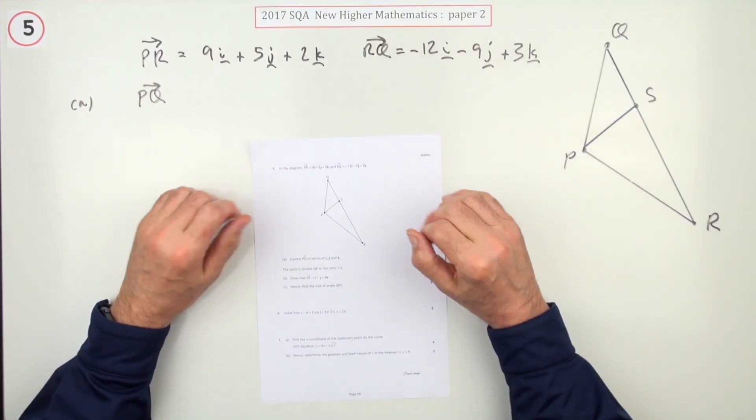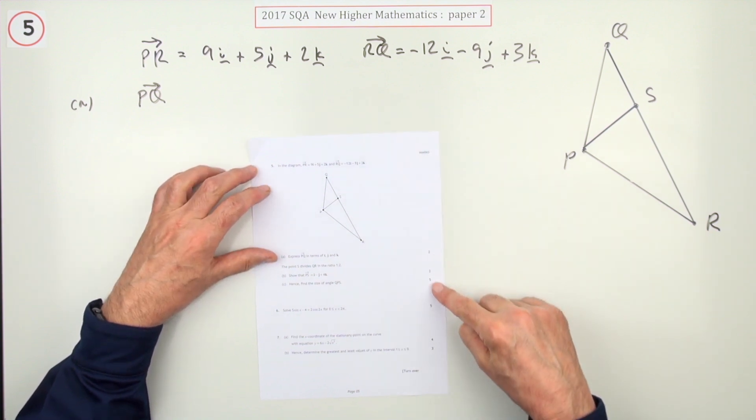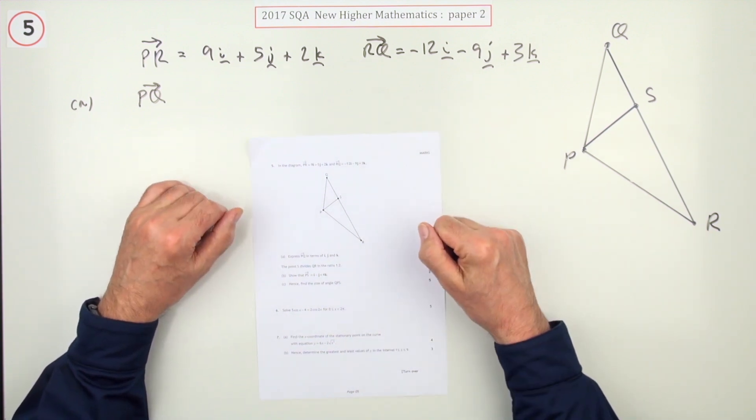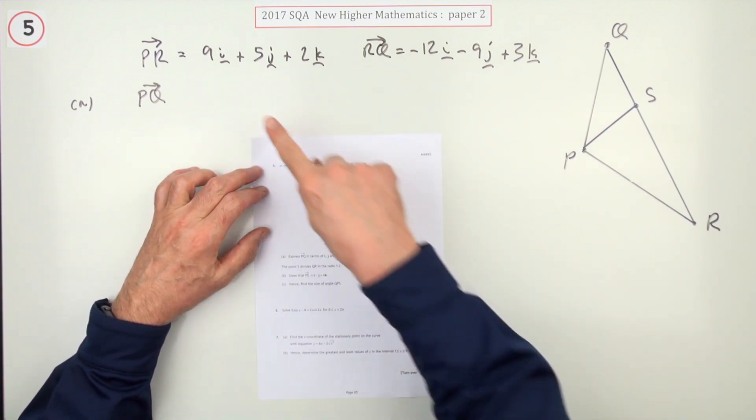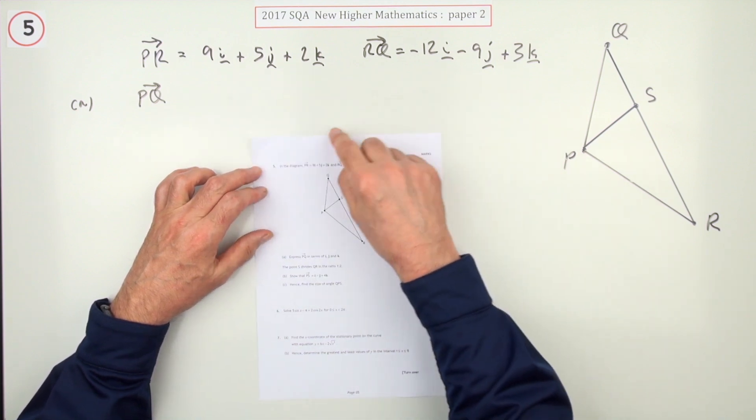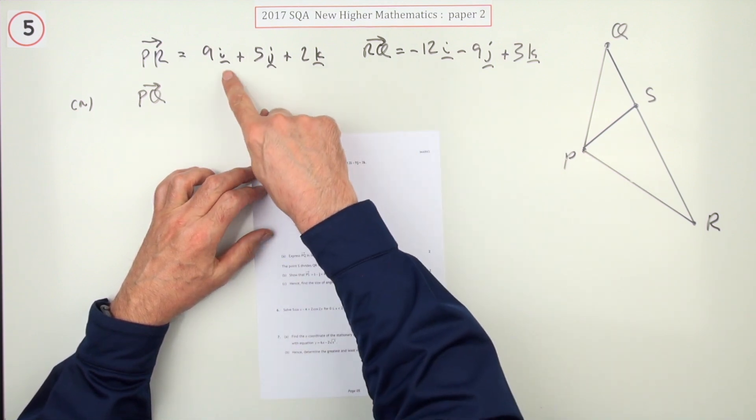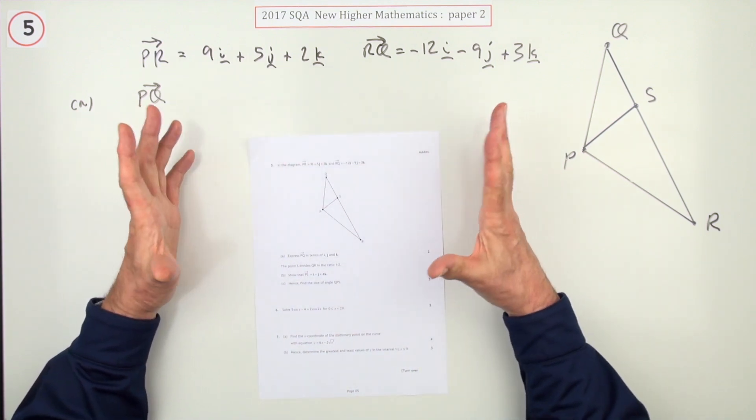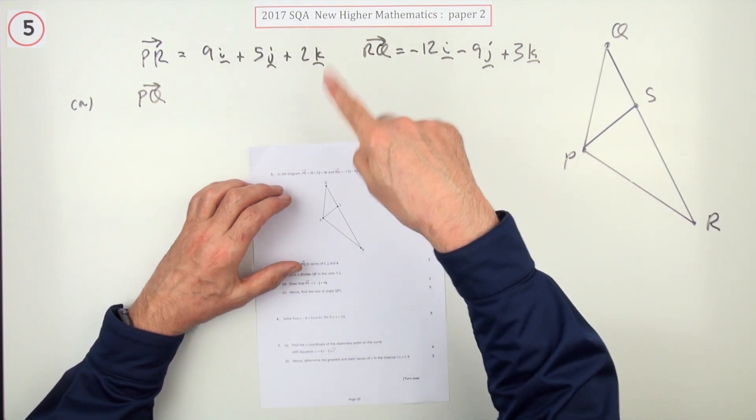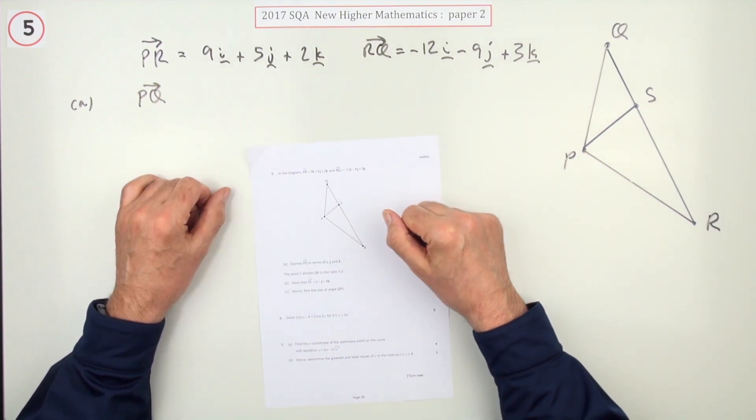Number five from paper two of the new higher maths. Nine mark vector question here. The first part just for two marks has the vectors written in terms of combinations of the unit base vectors, which can be a bit annoying because you like to write little column vectors just of the components.